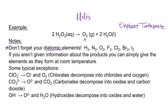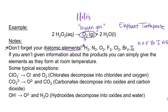Remember diatomic elements — when I say 'oxygen gas,' it means O2, because these elements always come in pairs. There are seven of them, and a mnemonic I gave you is HOFBrINCl — hydrogen, oxygen, fluorine, bromine, iodine, nitrogen, and chlorine. They never come alone; they're always paired. There are also some exception rules you don't need to memorize, but be aware they exist.